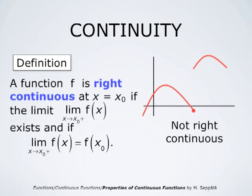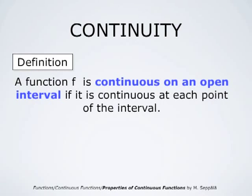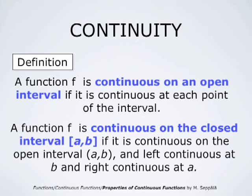This picture shows a function that is not right continuous at the point where its values jump, because approaching x₀ from the right, the values have a limit, but that limit is larger than the actual value of f at x₀. A function f is continuous on an open interval if it is continuous at each point of the interval, and continuous on the closed interval from a to b if it is continuous on the open interval and left continuous at b and right continuous at a.